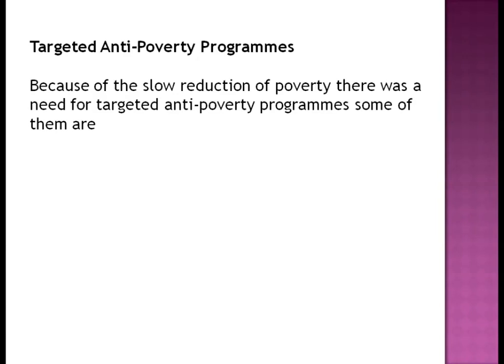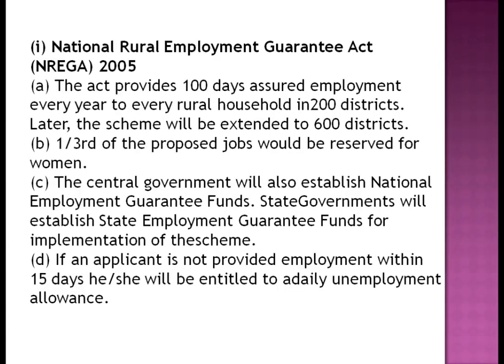Targeted anti-poverty programs: the Mahatma Gandhi National Rural Employment Guarantee Act provides 100 days of assured employment, initially covering 200 districts and later extended to 600 districts. One-third of the proposed jobs were reserved for women. The Central Government also established National Employment Guarantee Funds, and unemployment allowance is provided if a job is not given within 15 days.